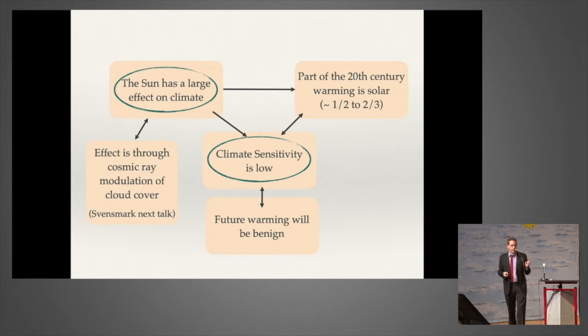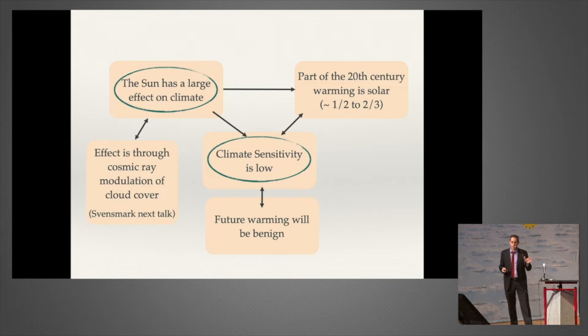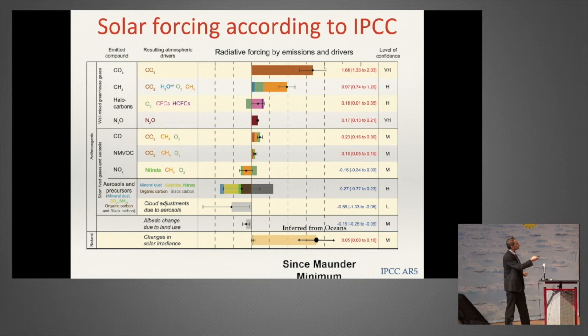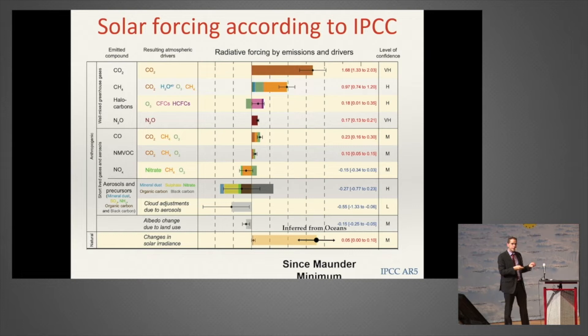The other thing I want to talk about is climate sensitivity—how much is the temperature on Earth supposed to change if we, for example, double the amount of CO2? These questions are related to each other: if the total radiative forcing over the 20th century is large—because not only are there contributions from greenhouse gases, but also a large contribution from the sun—it means that in order to explain the same warming, we need a smaller sensitivity.